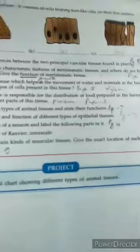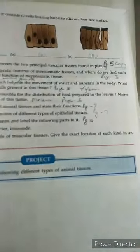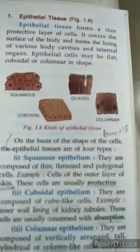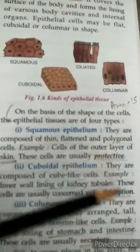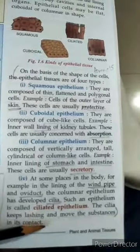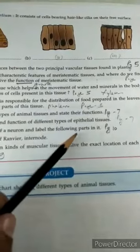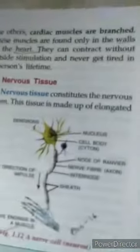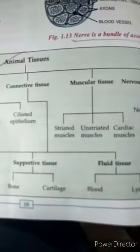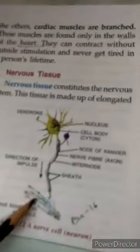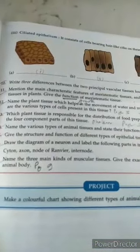Draw the structure and function of different types of epithelial tissues — this is also on page number seven. The diagrams are there and the functions are given alongside them. For the question to draw the diagram of a neuron and label it, the figure is on page number ten — figure 1.12. It is easy and you could have drawn it without any problem.